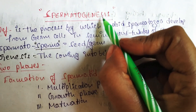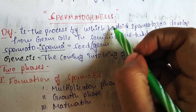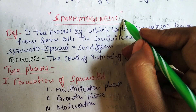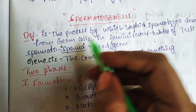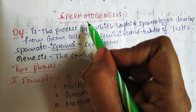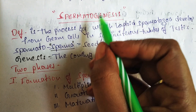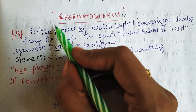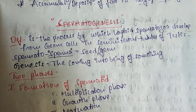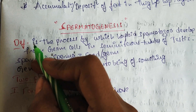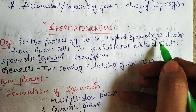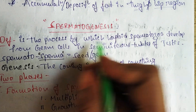Hello everybody, today's topic is spermatogenesis. Spermatogenesis is a process that occurs in the male reproductive system. The simple definition is: the process of formation of sperms in the male reproductive system. The main definition is: the process by which haploid spermatogoa develops from the germ cells in the seminiferous tubules of the testis.